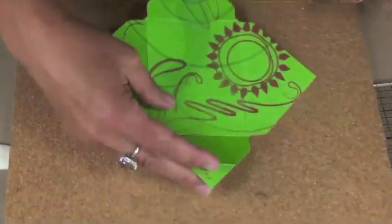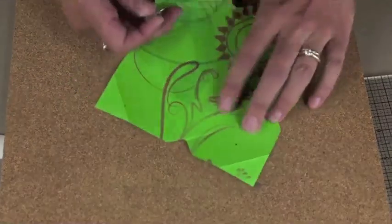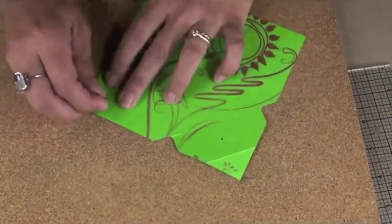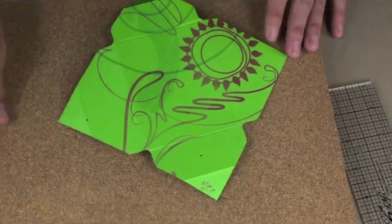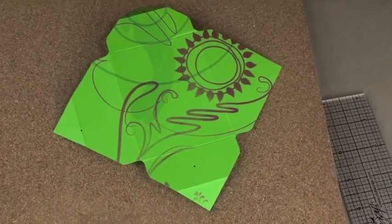Open that up and grab a corkboard or some other type of flexible surface. I'm just using a push pin here to pierce a hole into those two marked locations.